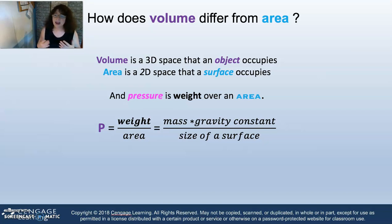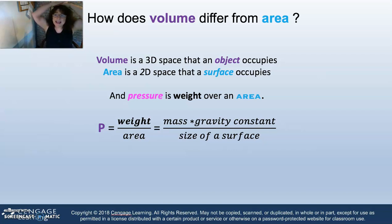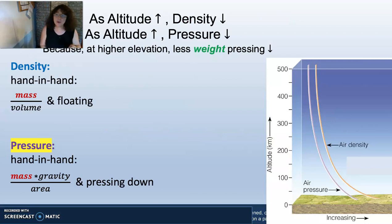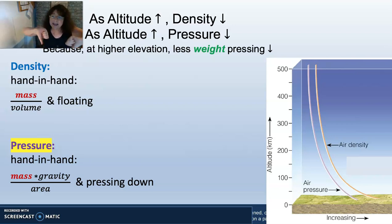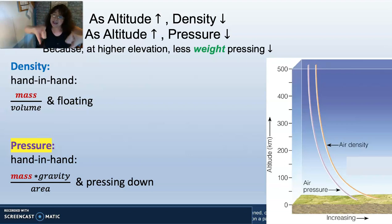Pressure is the calculation of weight over an area. That's why we think of it as a ton on a 1-by-1-foot space on top of our head. What you can remember is that as altitude increases, density decreases. As altitude increases, pressure decreases — because they both have mass in the numerator.